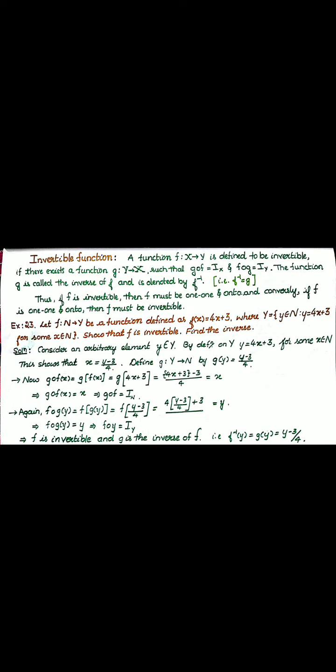First write f of x and g of x, then find the composition function. g composition f of x equals g of f of x equals g of 4x plus 3. Substituting 4x plus 3 into g of y: 4x plus 3 minus 3 divided by 4. The 3's cancel and the 4's cancel, giving x. Therefore g composition f of x equals x, which implies g composition f equals the identity function I with respect to the domain N.